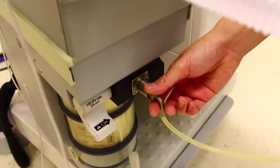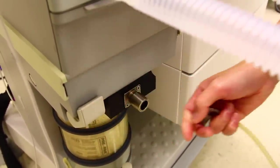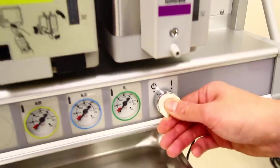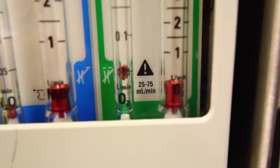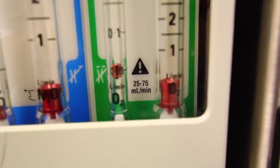Next, you want to remove the suction bulb and close the common fresh gas outlet switch. Now turn the machine master switch to the on position. After turning on the machine, the oxygen float will rise to a minimum flow of 50 ml per minute.